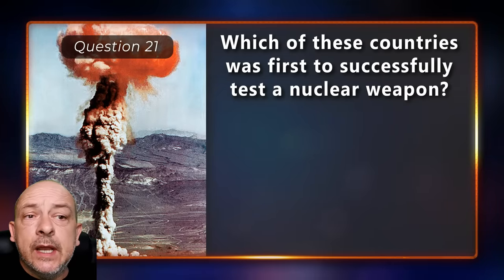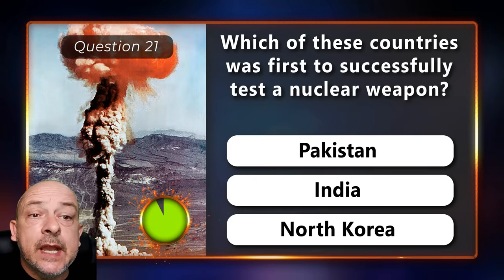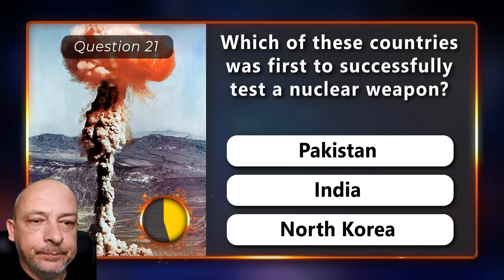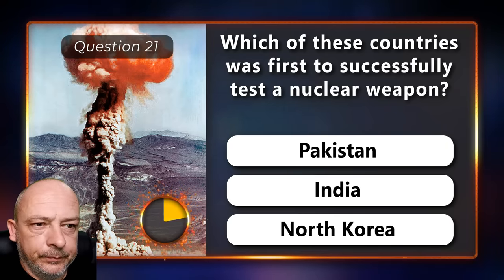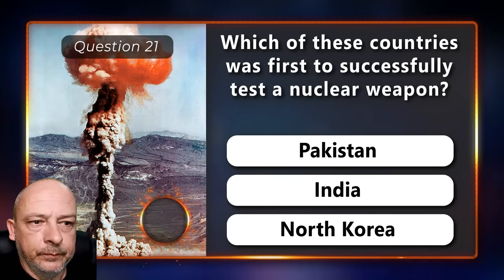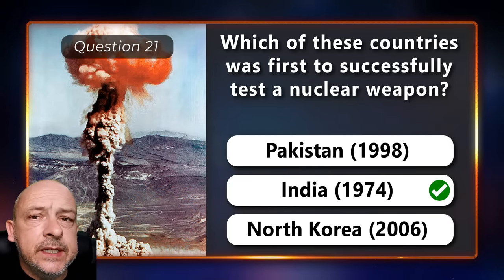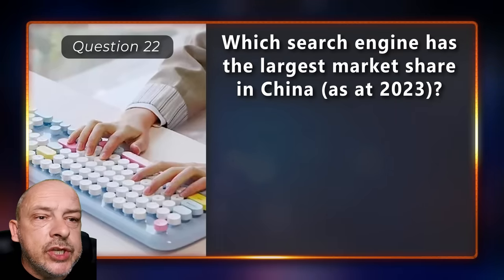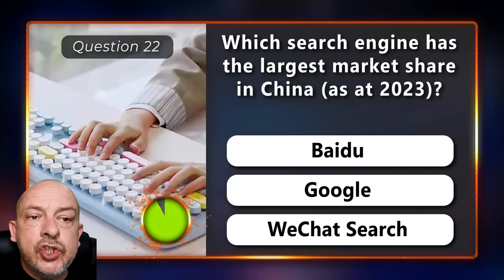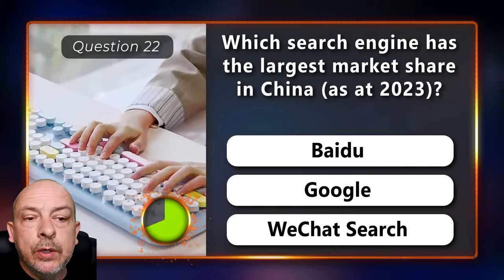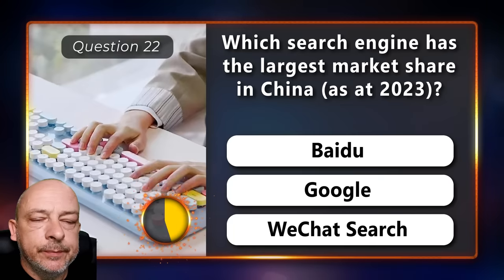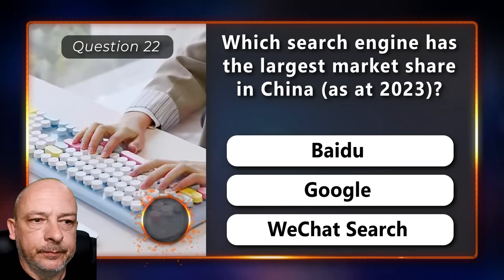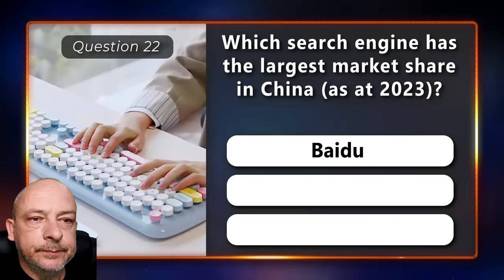Which of these countries was first to successfully test a nuclear weapon — Pakistan, India, or North Korea? The correct answer is India. Which search engine has the largest market share in China — Baidu, Google, or WeChat Search? Baidu.